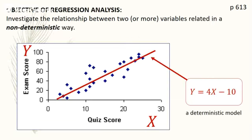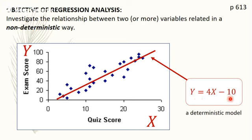The objective of regression is to investigate the relationship between two or more variables, specifically when they have a non-deterministic relationship. The deterministic case is very straightforward, but in reality life is not that simple. Going back to the quiz score and exam score example — if I plot this line through the data, I pick an equation like y = 4x − 10. In this line there is absolutely no randomness; the moment I give you X, you get a definite value of Y. This is a deterministic model. In the next step, we're going to add a term to this equation to account for the extra randomness we observe.